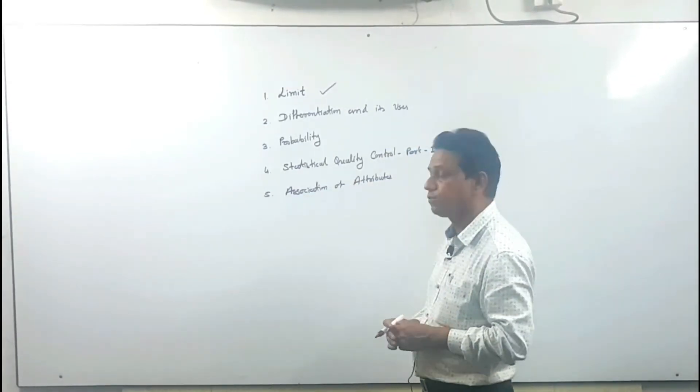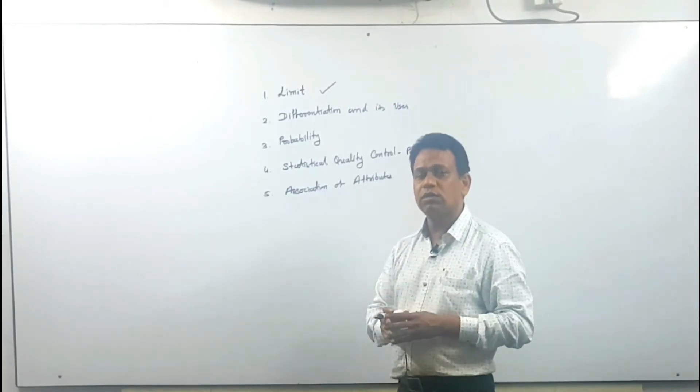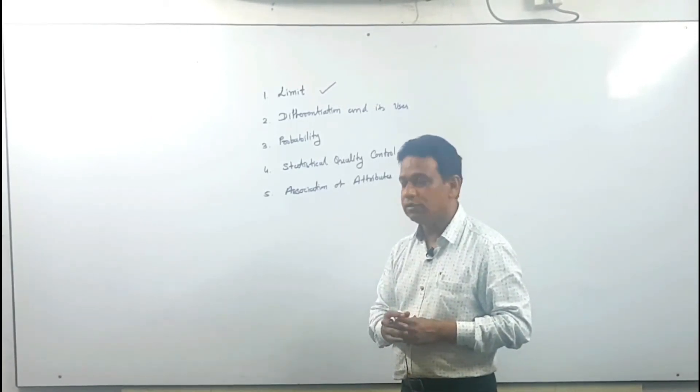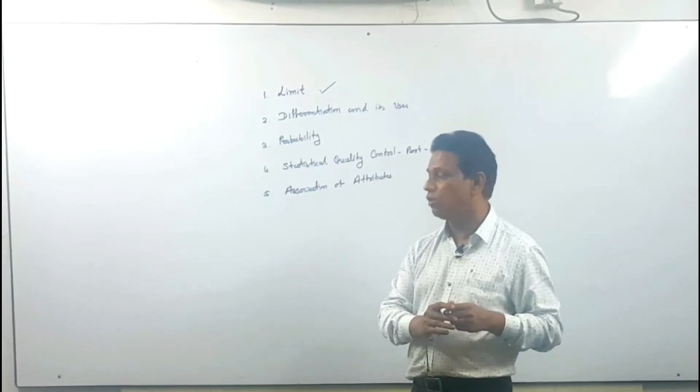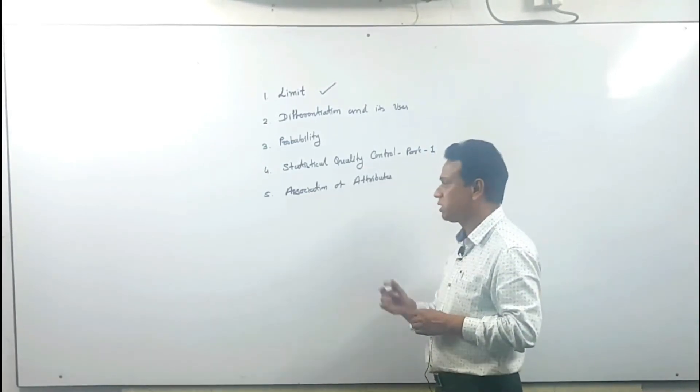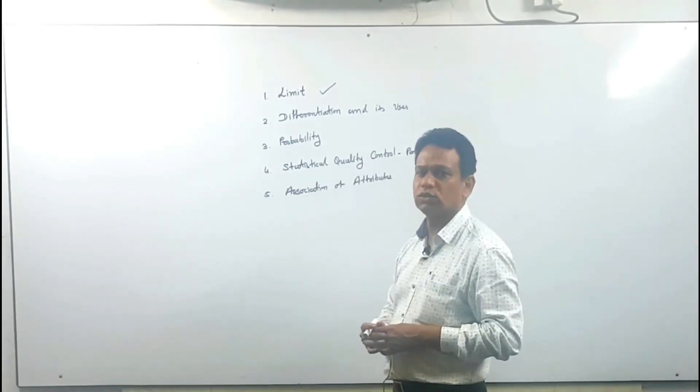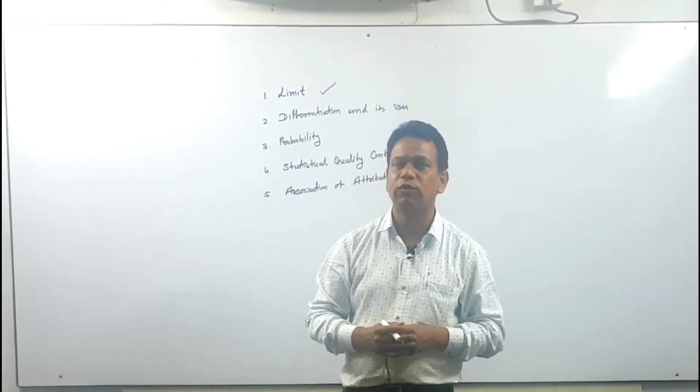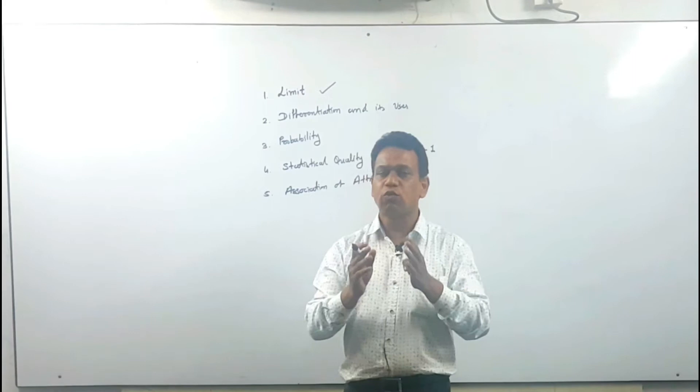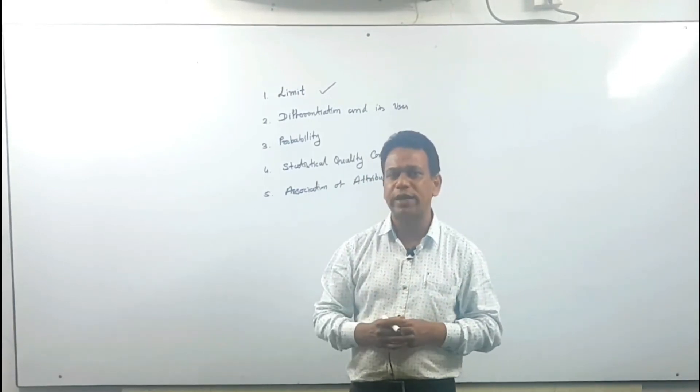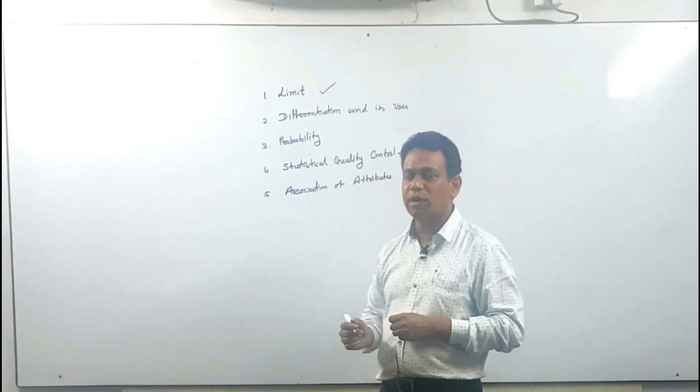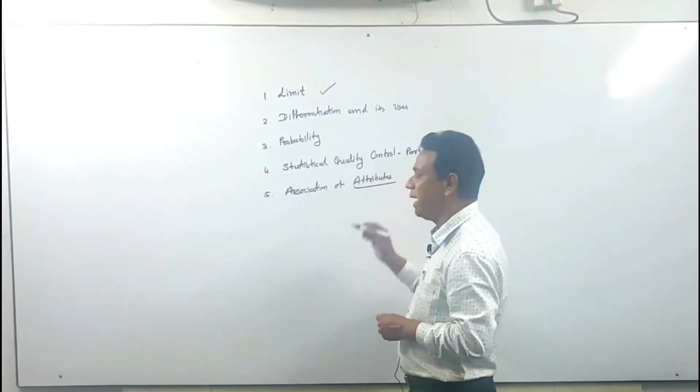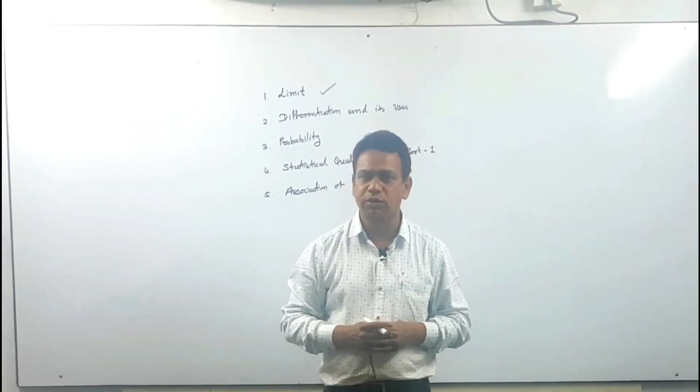Here we have to learn how to control quality in a statistical way. Then Association of Attributes. We all know there are two types of data in statistics: quantitative and qualitative. Quantitative means it is easy to express by numbers, but what about quality? That is called attributes, which is not easy to present in numbers.